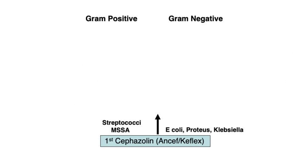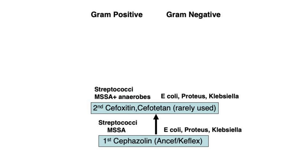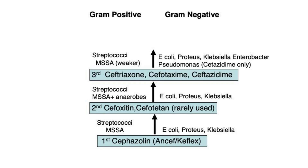Now let's look at the cephalosporin ladder. Whenever possible, cephalosporins should be prescribed because they are the safest class of antibiotics, being associated with the lowest number of adverse reactions. The first cephalosporin developed was cefazolin (trade name Ancef). This agent covers MSSA, streptococci, and a moderate number of E. coli, Proteus, and Klebsiella. The oral preparation, Keflex, is well absorbed. These first-generation cephalosporins are the treatment of choice for many soft tissue infections. The second generation of cephalosporins is now rarely used; the only addition to their spectrum was anaerobic bacteria. Cefoxitin is recommended for treatment of pelvic inflammatory disease.